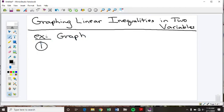Let's say that we have 3x minus y is less than 2. This is a little bit different than what we've been doing the last couple days because now we have an x and a y in the equation.